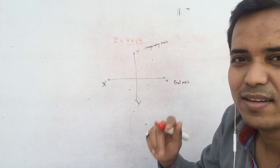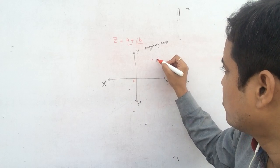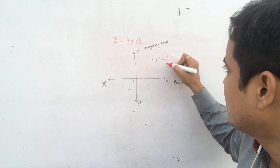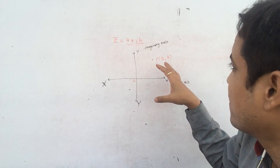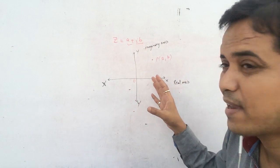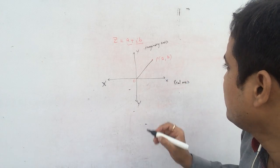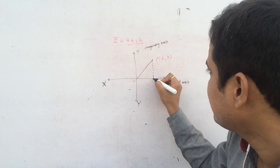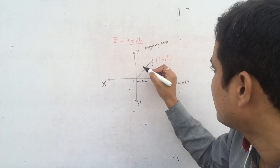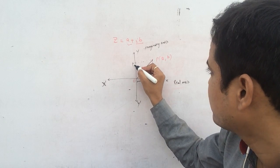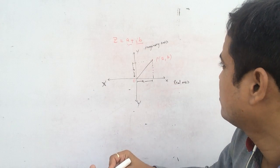So suppose P is the point, and A and B are both positive. This is called O (the origin) and this is called P, the point. You can write it as (A, B). This is the representation of the complex number on the Argand plane or Gaussian plane. OP is the length here.